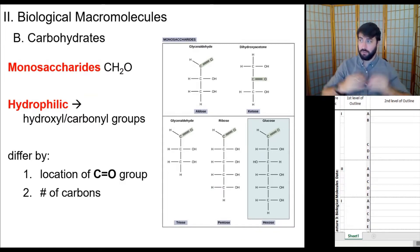The monomer of a carbohydrate is a monosaccharide, and they follow this same general pattern of one carbon, two hydrogens, one oxygen. They are usually hydrophilic because of the hydroxyl and carbonyl groups. They can be different depending on the position of the double-bonded oxygen and the number of carbons, so you can have different configurations possible.